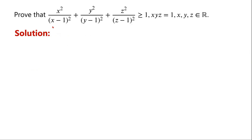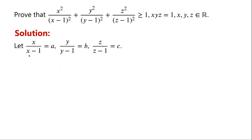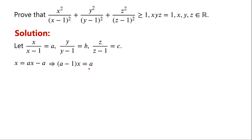You can see that the left-hand side of the inequality is the sum of three squares. We let x/(x-1) = a, y/(y-1) = b, z/(z-1) = c. By rearranging, we can write x = ax - a, so (a-1)x = a.